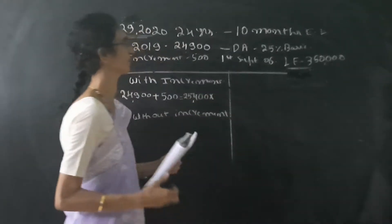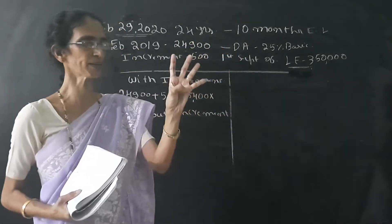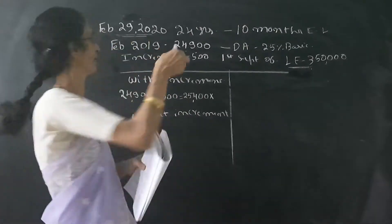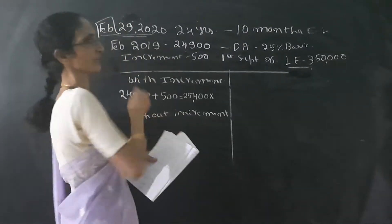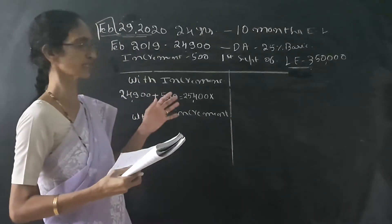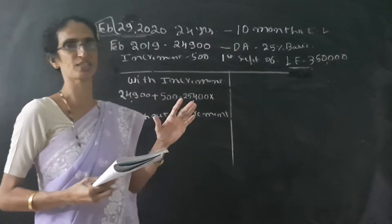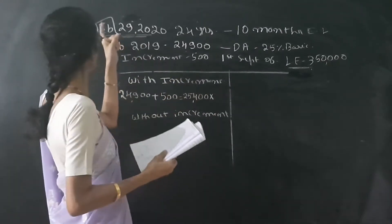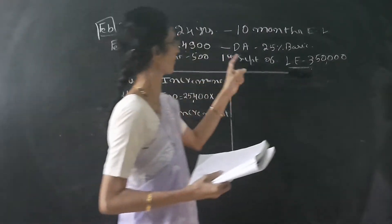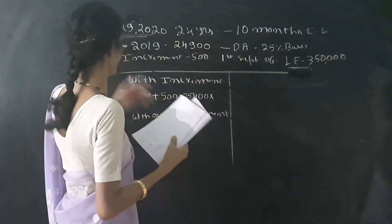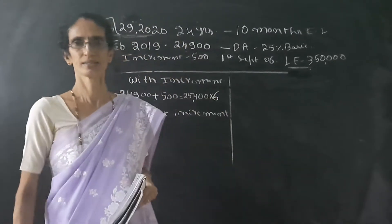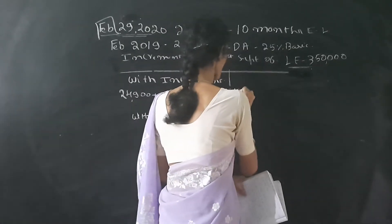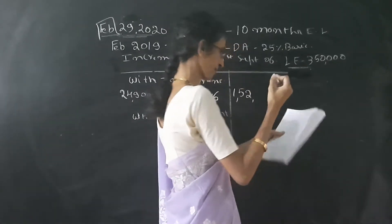Now, how many months is this? From September to February — that is September, October, November, December, January, February — we take February also because we are calculating leave encashment. So from September to February is 6 months. So we get 1,52,400.